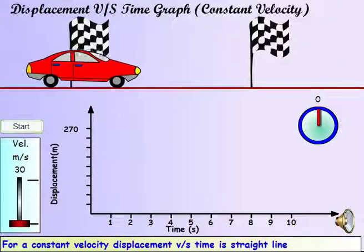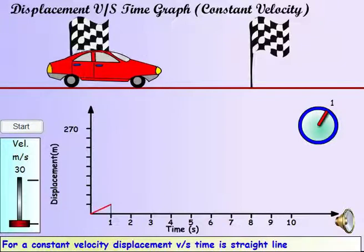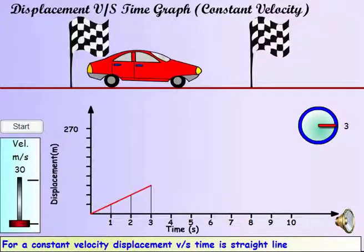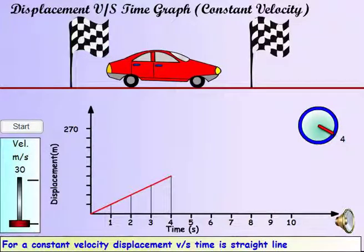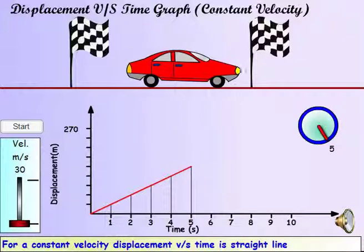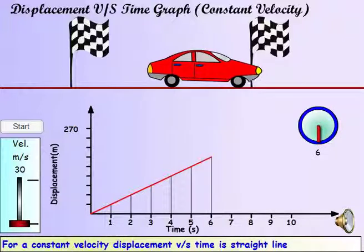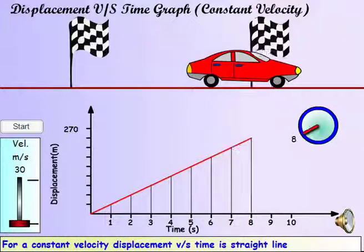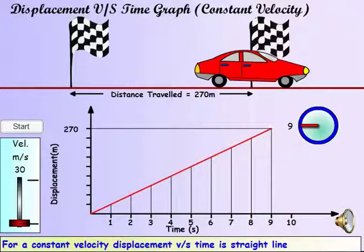The displacement versus time graph is a straight line at constant velocity. If the velocity is increased, the graph appears steeper.